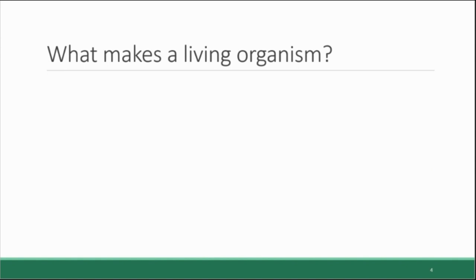Given that environmental science straddles the living and non-living natural worlds, it's important that we understand the difference between what is considered alive and what is considered not alive. There are generally eight characteristics that, when taken together, distinguish something as being alive. If you have all of these characteristics, then you are a living thing, but if you're missing even one of them, then you are not.